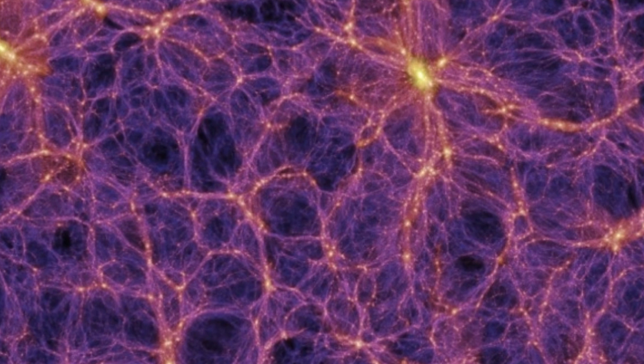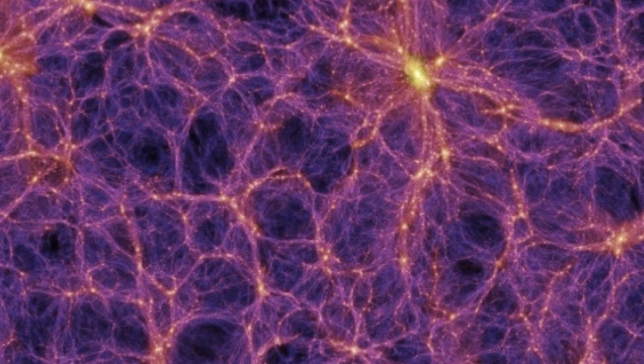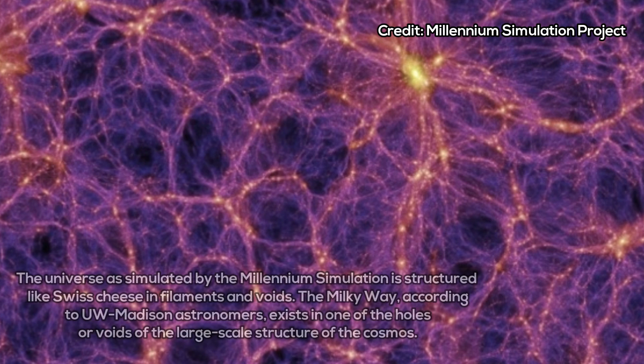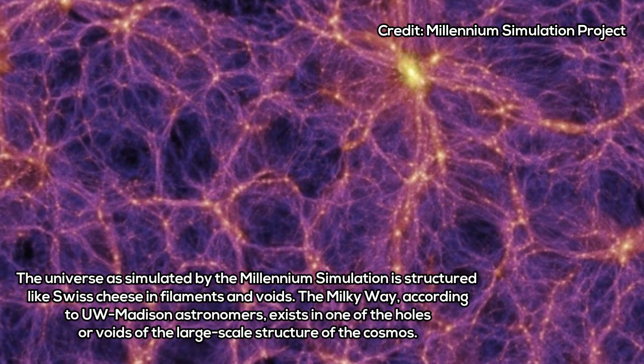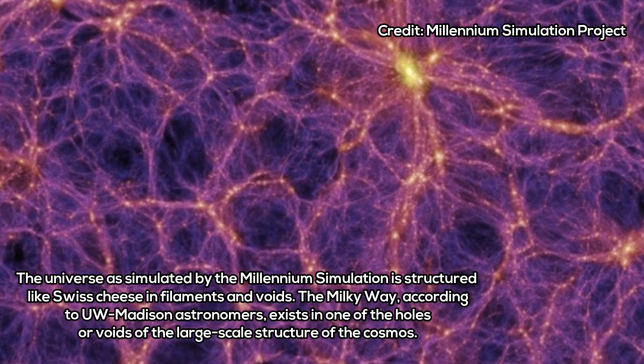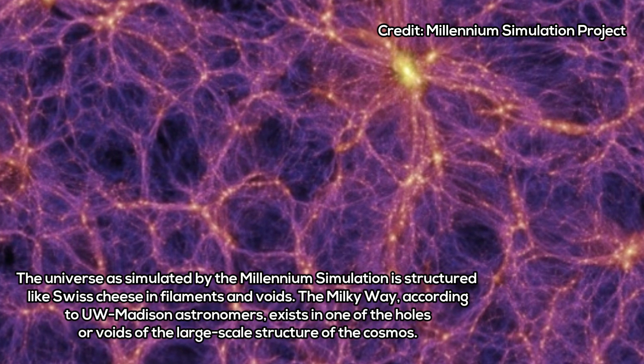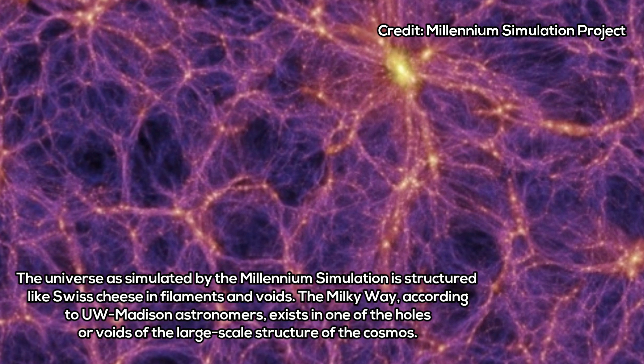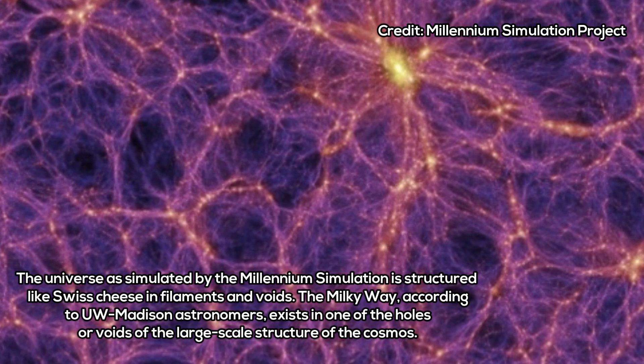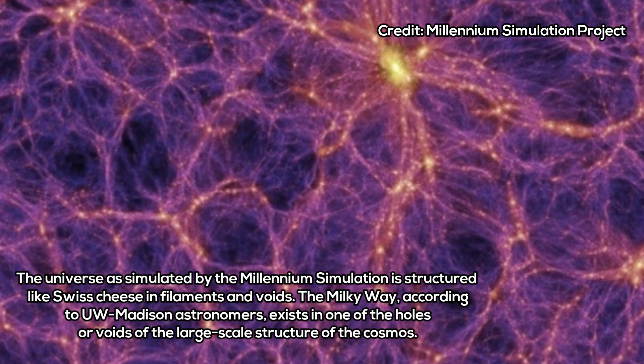In a 2013 observational study, University of Wisconsin-Madison astronomer Amy Barger and her then student Ryan Keenan showed that our galaxy, in the context of the large-scale structure of the universe, resides in an enormous void—a region of space containing far fewer galaxies, stars, and planets than expected.